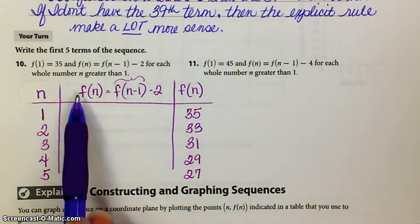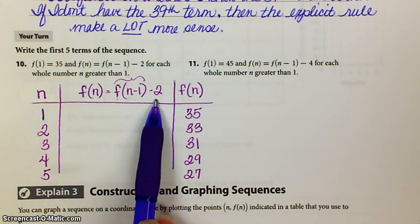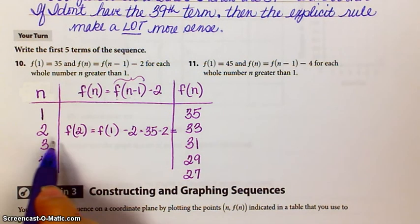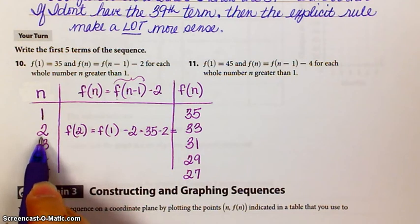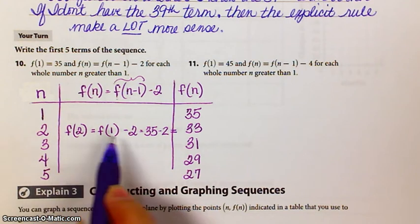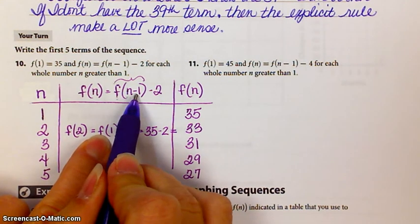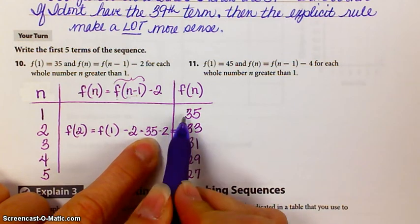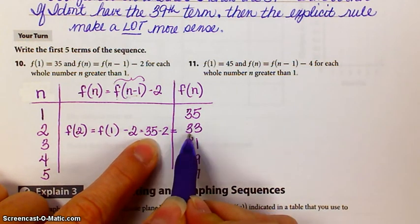Okay, recursive format looks like this. Okay, so the value of the second term is second term minus 1, so the value of the first term minus 2. The value of the first term is 35, so 35 minus 2, and that gives us 33.